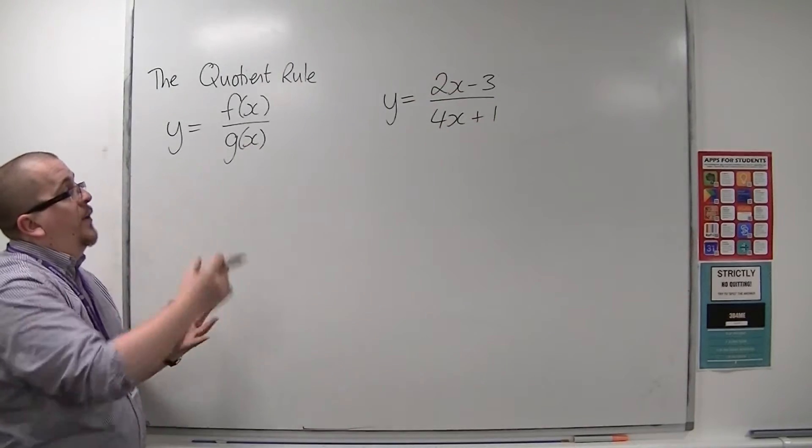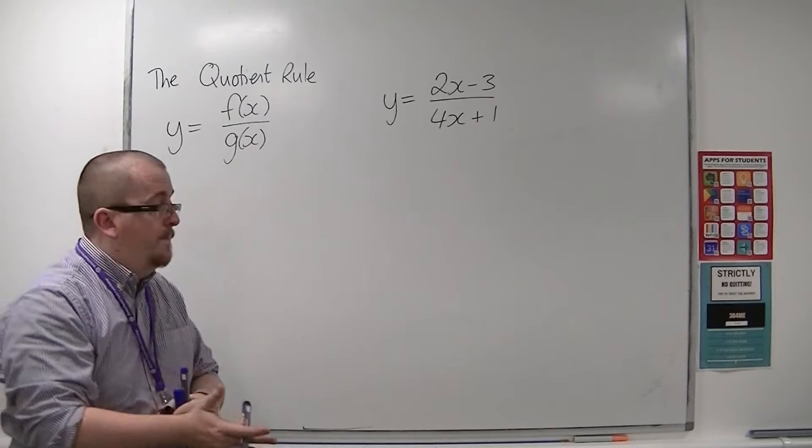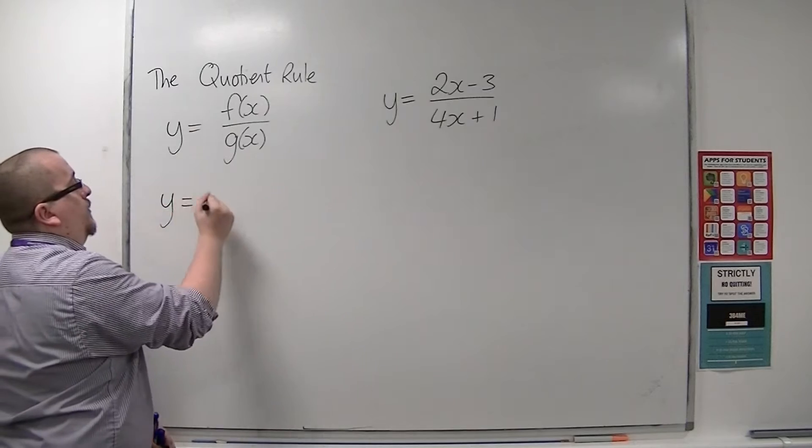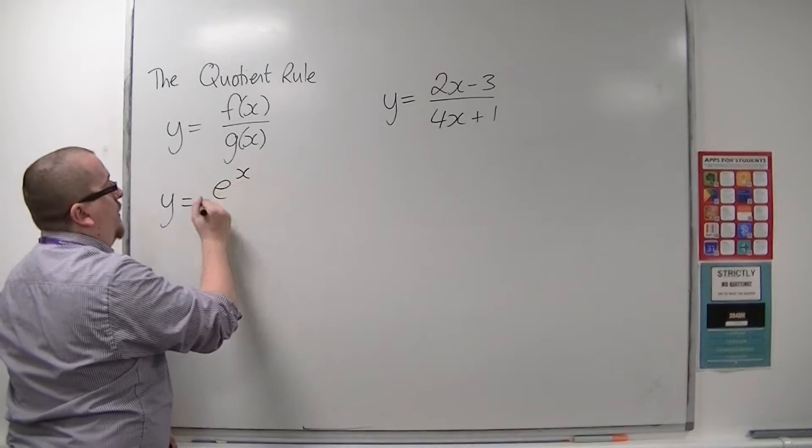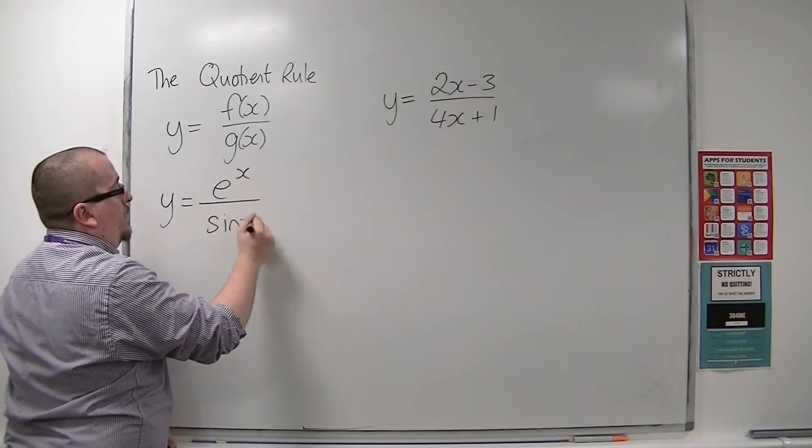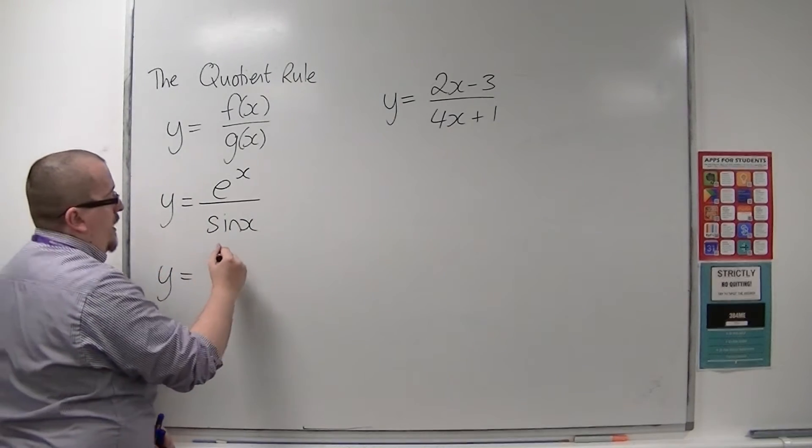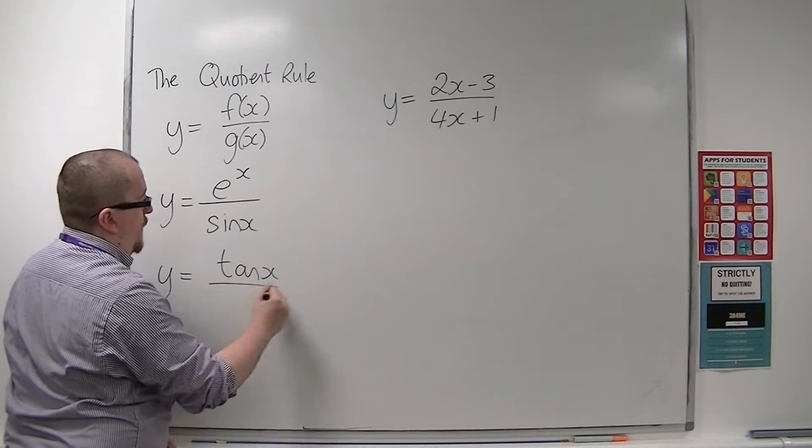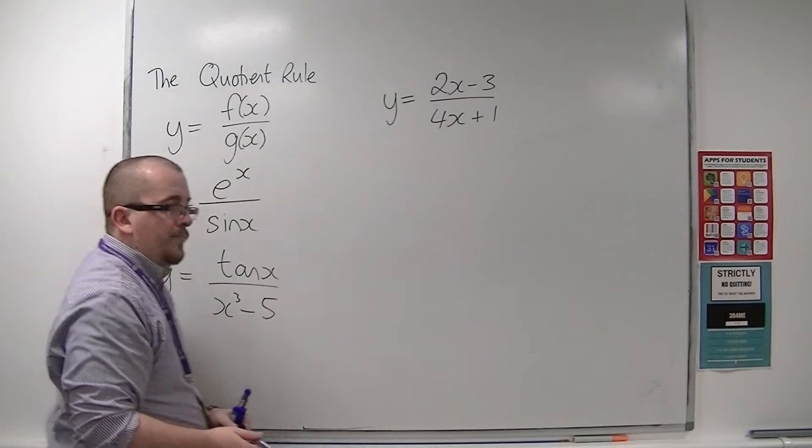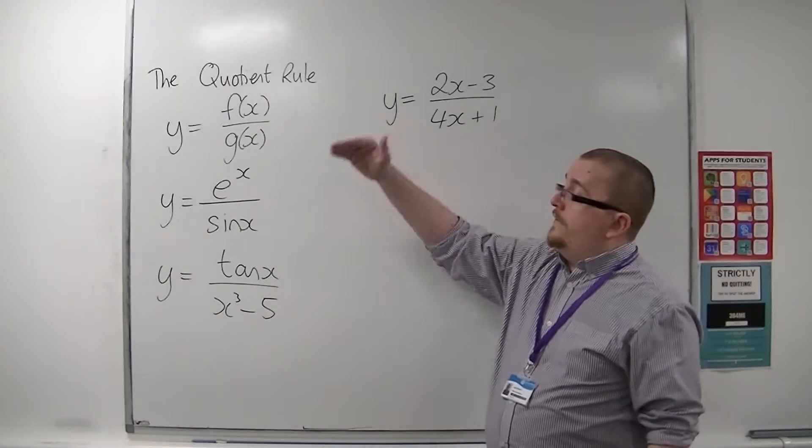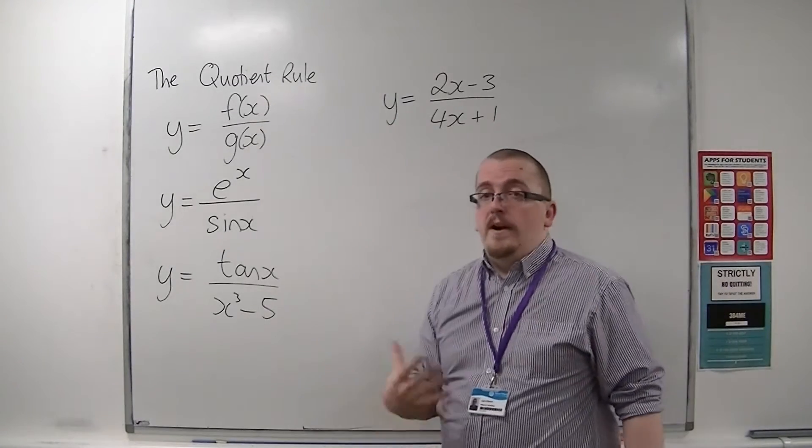Where f(x) is 2x minus 3 and g(x) is 4x plus 1. It will also enable us to differentiate things like y equals e^x over sin x, or y equals tan x over x cubed minus 5, where we have one function divided by another.